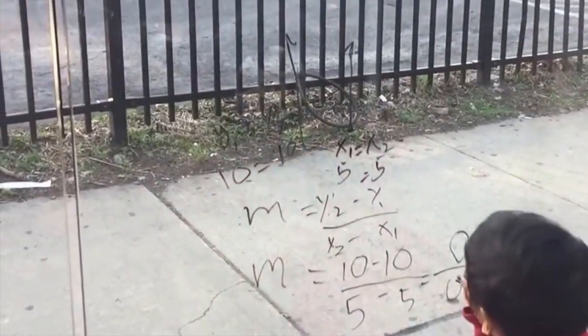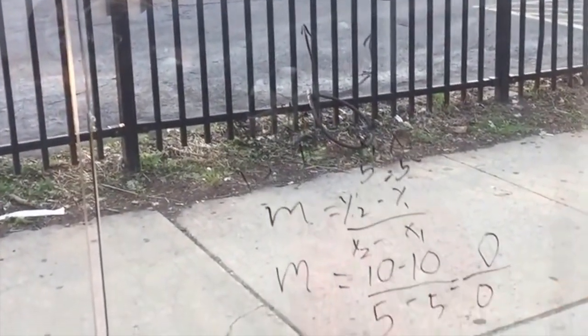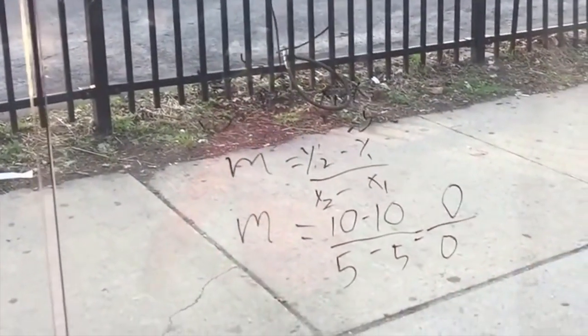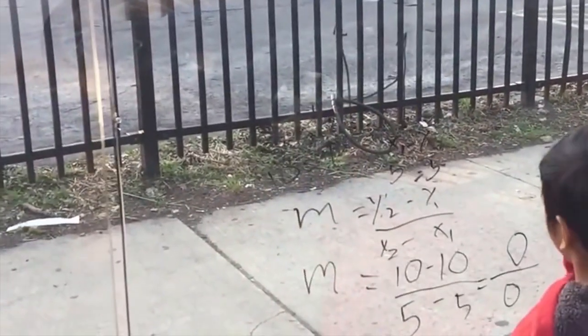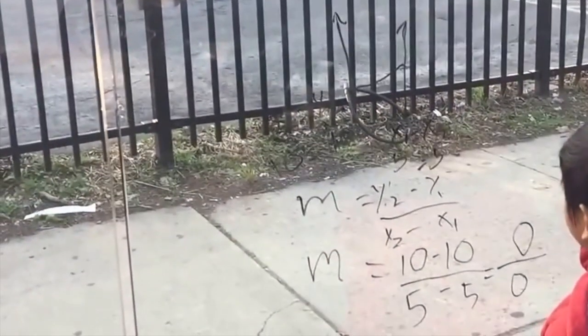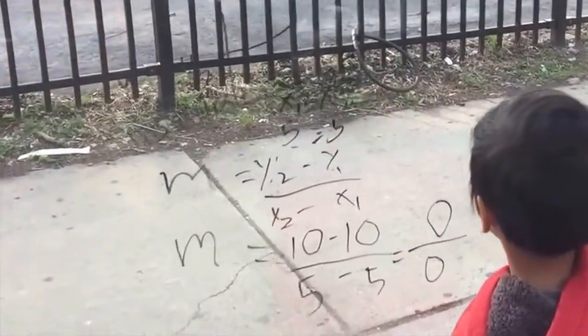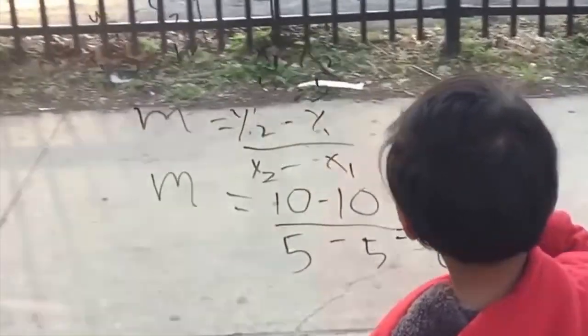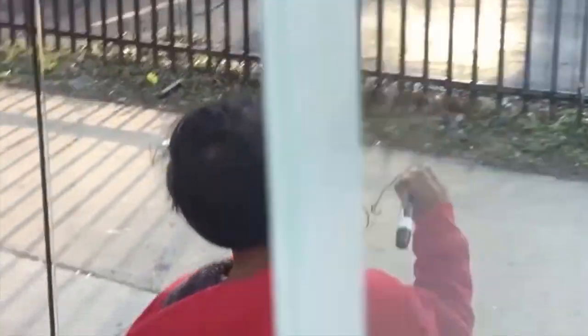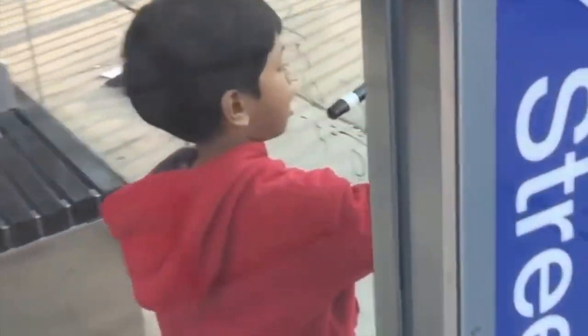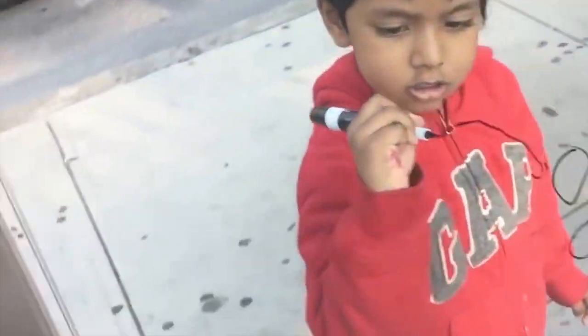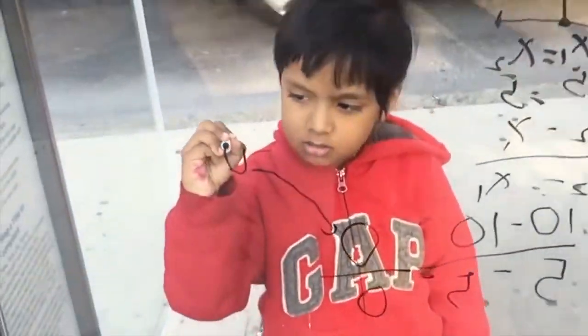And since the slope is undefined, that means that 0 over 0 must be undefined.